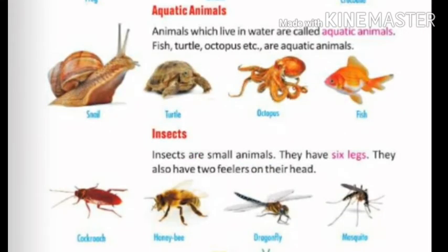Next, we come to aquatic animals. We have learnt in the previous class what aquatic animals are — animals which live in water. Examples of aquatic animals are snail, turtle, octopus, starfish, jellyfish. They are called aquatic animals. Revise these names when you read the chapter.